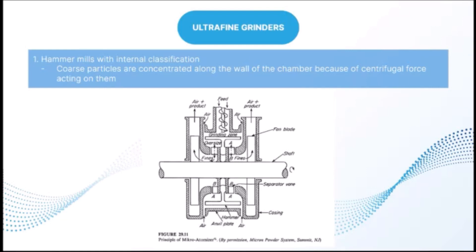A hammer mill with internal classification, such as a micro-atomizer, has swing hammers between two rotor discs plus two fans drawing air through the mill and discharging into ducts leading to product collectors. Short radial vanes on the rotor discs separate oversized particles from acceptable ones. Coarse particles are concentrated along the chamber wall by centrifugal force. These mills reduce 1–2 tons per hour to an average particle size of 1–20 micrometers with an energy requirement of about 40 kilowatt-hours per metric ton.